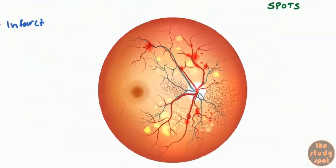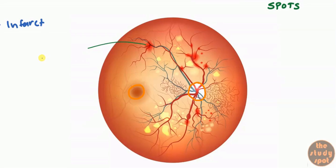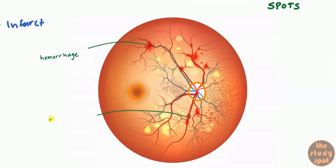Let's get oriented on the fundoscopic image. Here is the optic nerve, and here we have the macula, also known as the fovea. The first finding to show is up here — this is an area of hemorrhage. You can see these hemorrhages are kind of isolated right next to the vessels. These are called blot hemorrhages and tend to be around the vessel because the vessel is leaking blood.